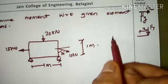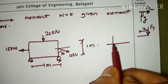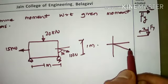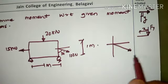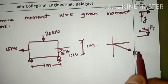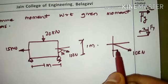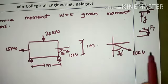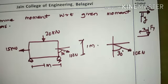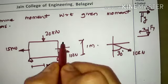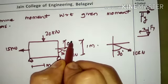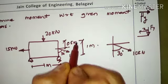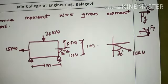The 10 kN force subtends an angle of 30 degrees with respect to the vertical face — that is, 10 kN is placed along an inclined direction subtending 30 degrees with respect to the vertical y-axis. We are supposed to find out the moment with respect to a given moment center.